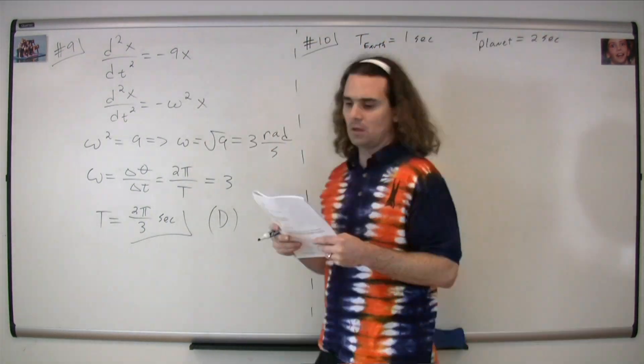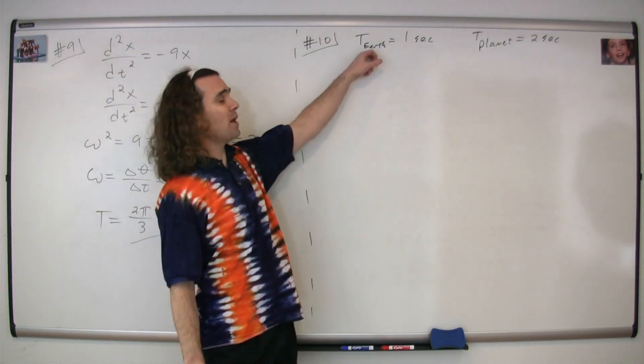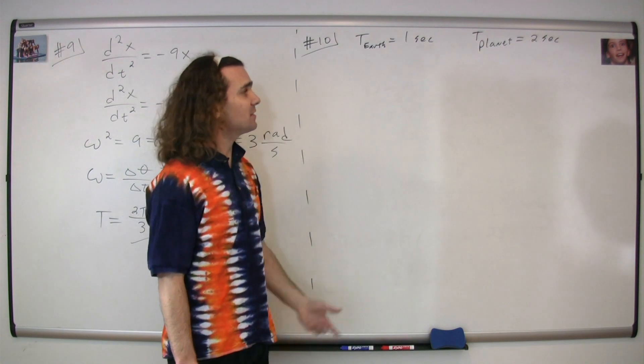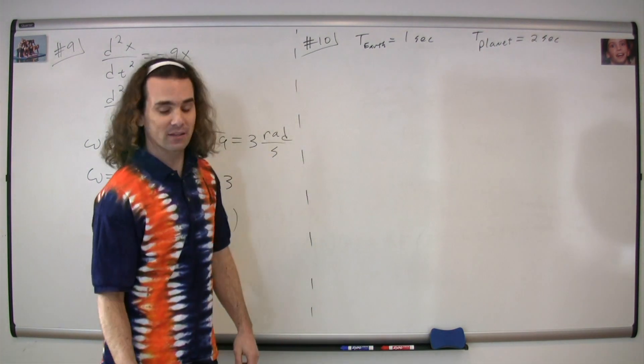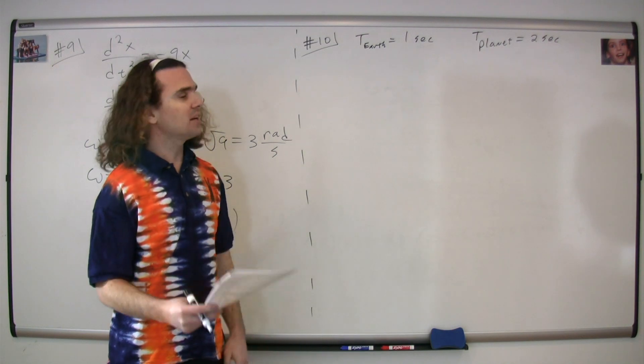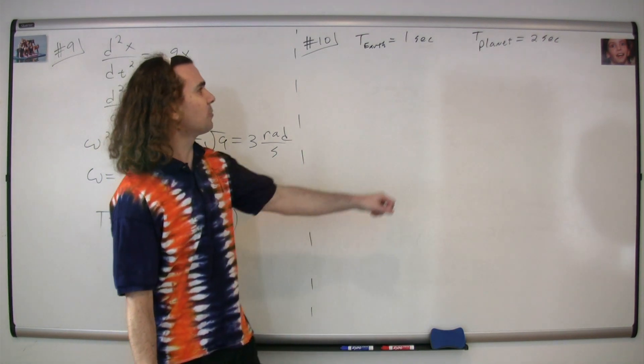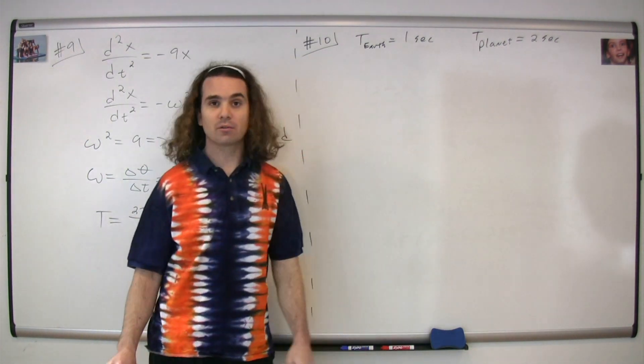Mr. P: Question number 10. We have a pendulum that on Earth has a period of one second, and when we take it to some other planet, it has a period of two seconds. The question is comparing the acceleration due to gravity on the planet versus Earth.